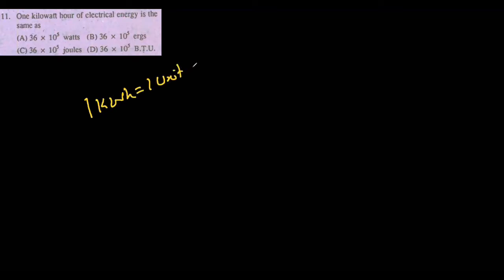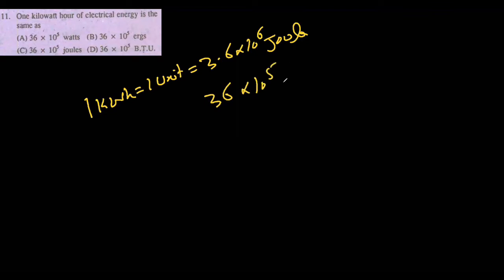One kilowatt hour of electrical energy, which is also equal to one unit of electricity, is equal to 3.6 times 10 to the power 6 joules. If we express all powers in 5, that will be equal to 3.6 times 10 to the power 5 joules, so 3.6 times 10 to the power 5 watt is the correct answer.